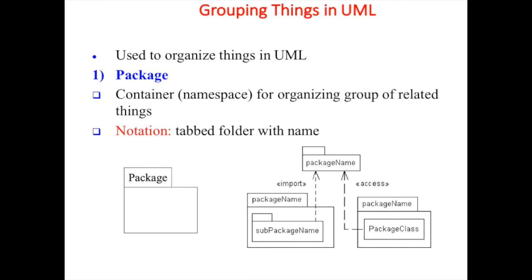Packages are used to organize things in UML. A package is a container that holds a group of similar, related things in one package or group, represented as a tabbed folder with the package name. In the figure we can see two packages - one inherited package named 'first', and the subclasses can interact, access, or import those packages.